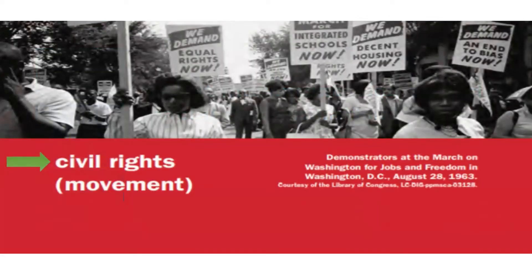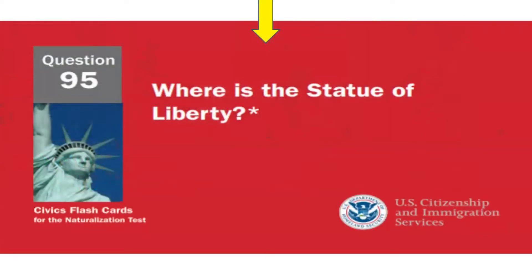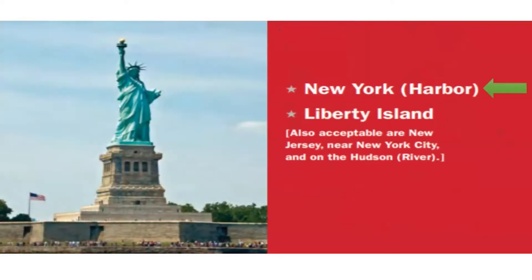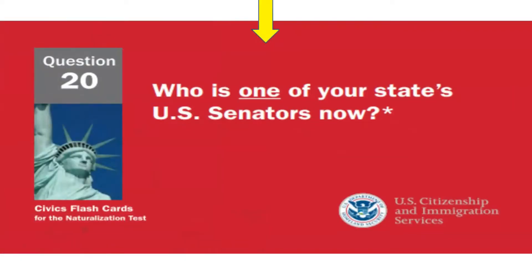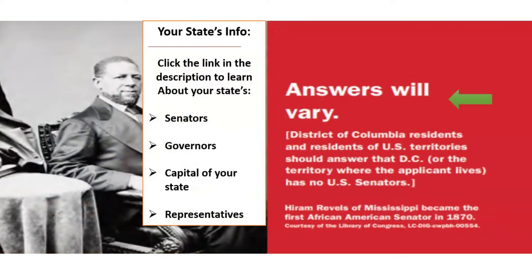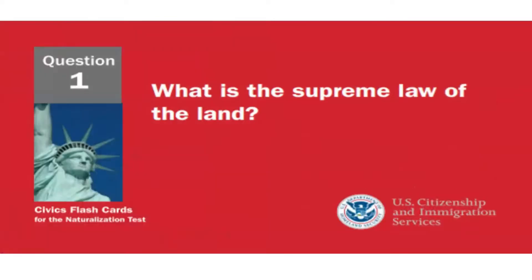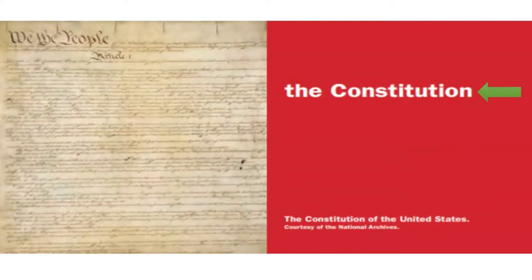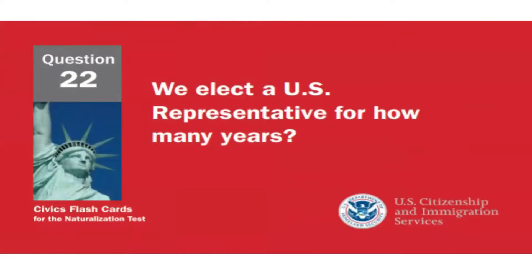We elect a U.S. Senator for how many years? Six years. What movement tried to end racial discrimination? The Civil Rights Movement. Where is the Statue of Liberty? New York Harbor. Who is one of your state's U.S. Senators now? Answer will vary — please look at the description part of this video where you will find a link to the answer. What is the supreme law of the land? The Constitution.